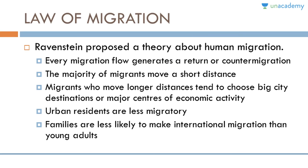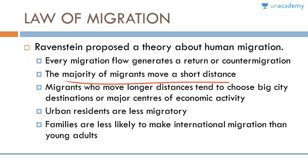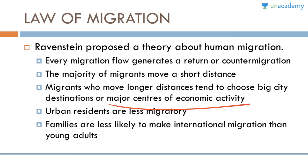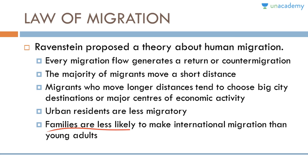Ravenstein proposed a theory known as the Law of Migration with five propositions: first, every migration flow generates a return or counter-migration; second, the majority of migrants move a short distance; third, migrants who move longer distances tend to choose big city destinations or major centers of economic activity; fourth, urban residents are less migratory; and fifth, families are less likely to make international migration than young adults.